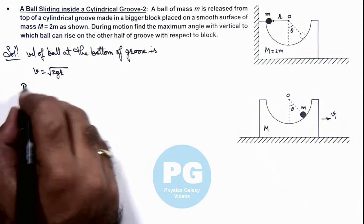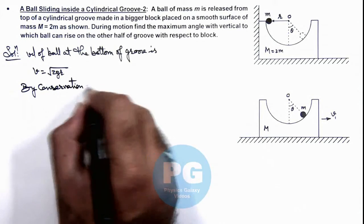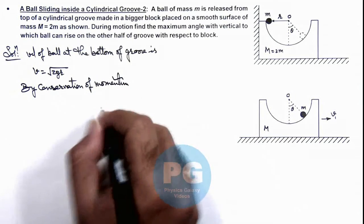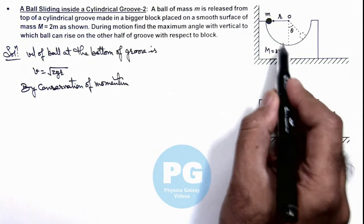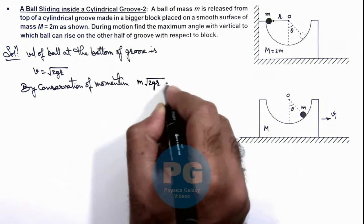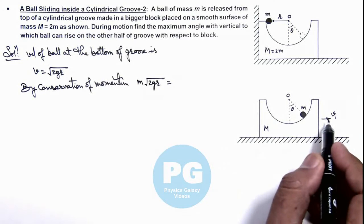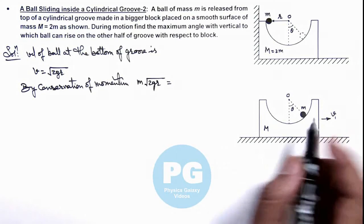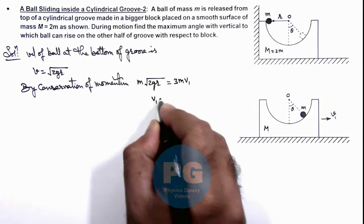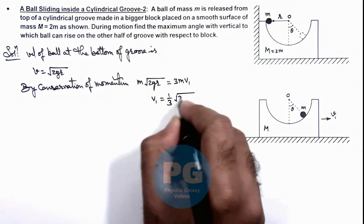So we can write by conservation of momentum: the initial momentum of ball when it was at the bottom was m√(2gR), must be equal to the system moving toward right with common velocity v₁. We can write 3m·v₁, which gives us the value of v₁ with which the system is moving: it is (1/3)√(2gR).